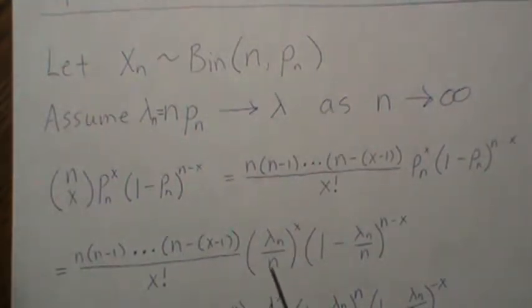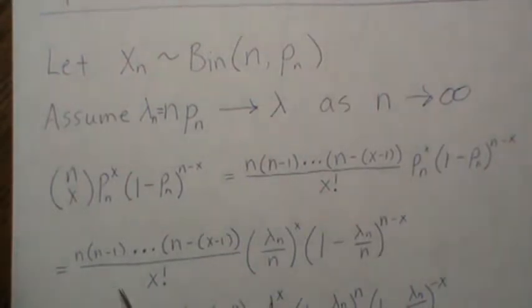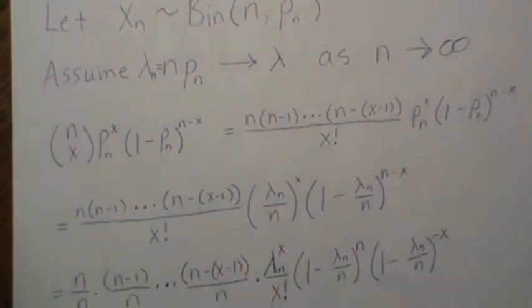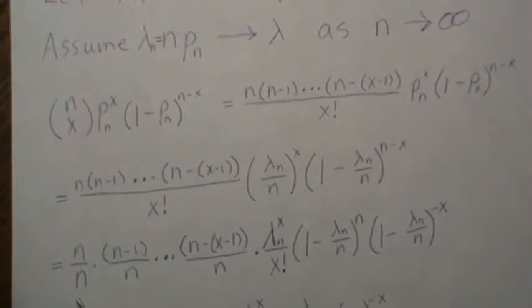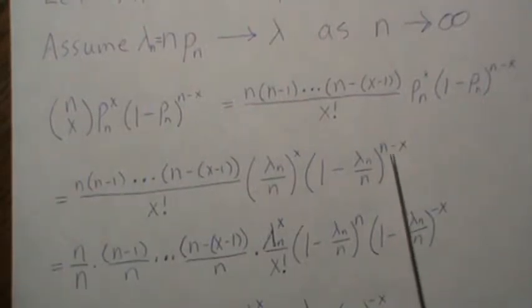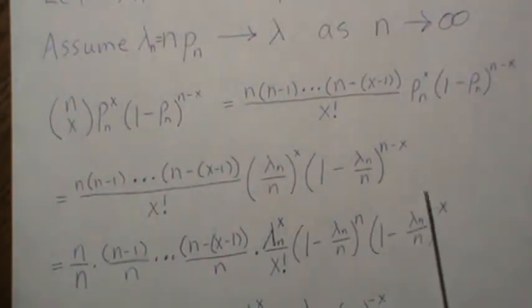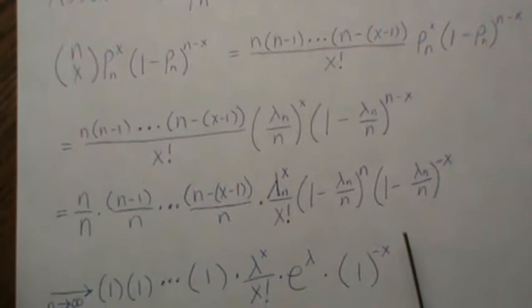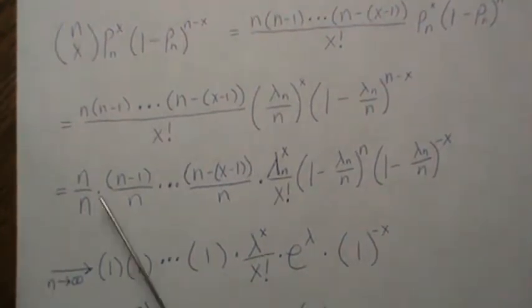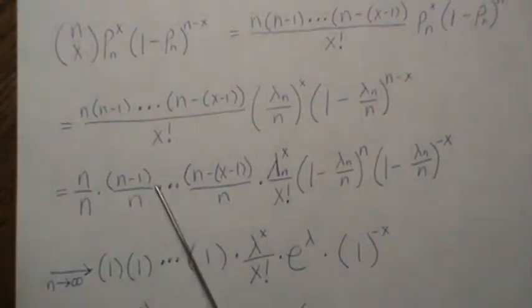And so here we have x n's. So let's take that and put it under each one of those. So this n goes under each one of those. And then we're left with lambda_n to the x over x factorial. This right here, we break apart into the n part and then the minus x. And as n goes to infinity, each one of these goes to 1.